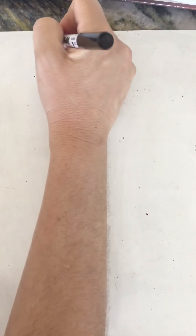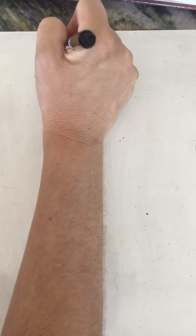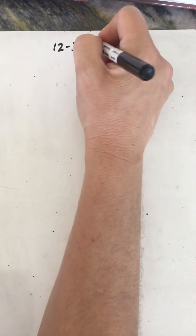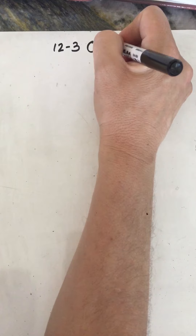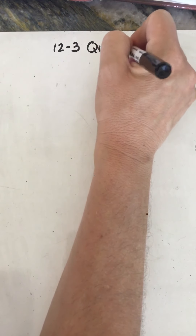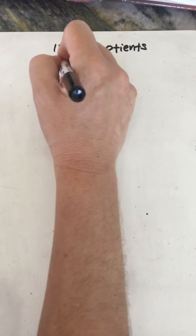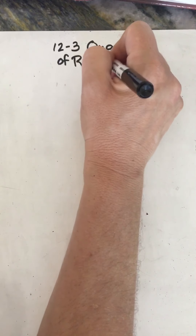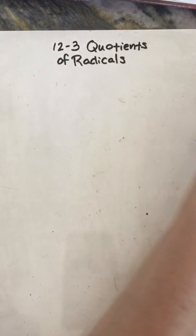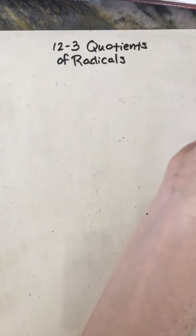Hi, I'm back. Thanks for watching my video today. We're going to be in section 12-3. All right, just kidding. That was silly. We are doing quotients. I just embarrassed my son. Sorry. I'm trying to be funny because this gets old after a while. Quotients of radicals. I don't like not being with you all. I feel funny talking to myself.